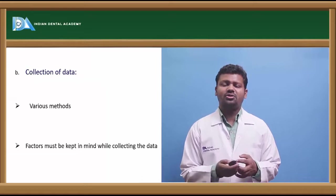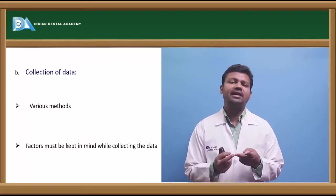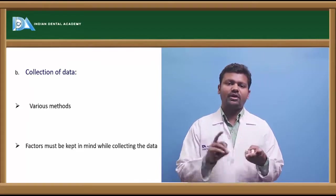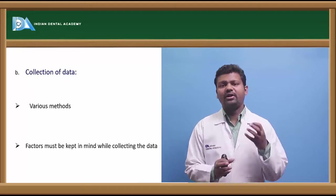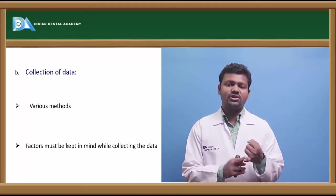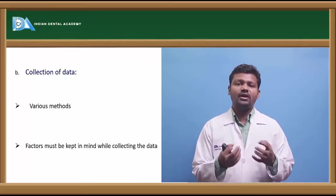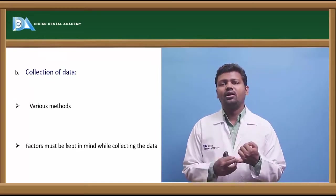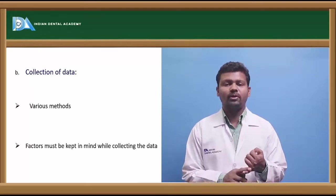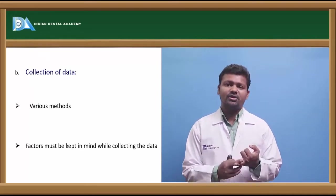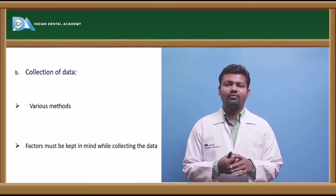Now next is collection of data. Again there are various methods. There are two types of methods for collecting data. These are qualitative data and quantitative data. Qualitative data is the data which is related to the attributes like age, gender, ethnicity, race. Whereas quantitative data is the data which is obtained through the measurement like recording of recognition of blood pressure through sphygmomanometer by arch with the determination or with the use of caliper. This is the quantitative data.